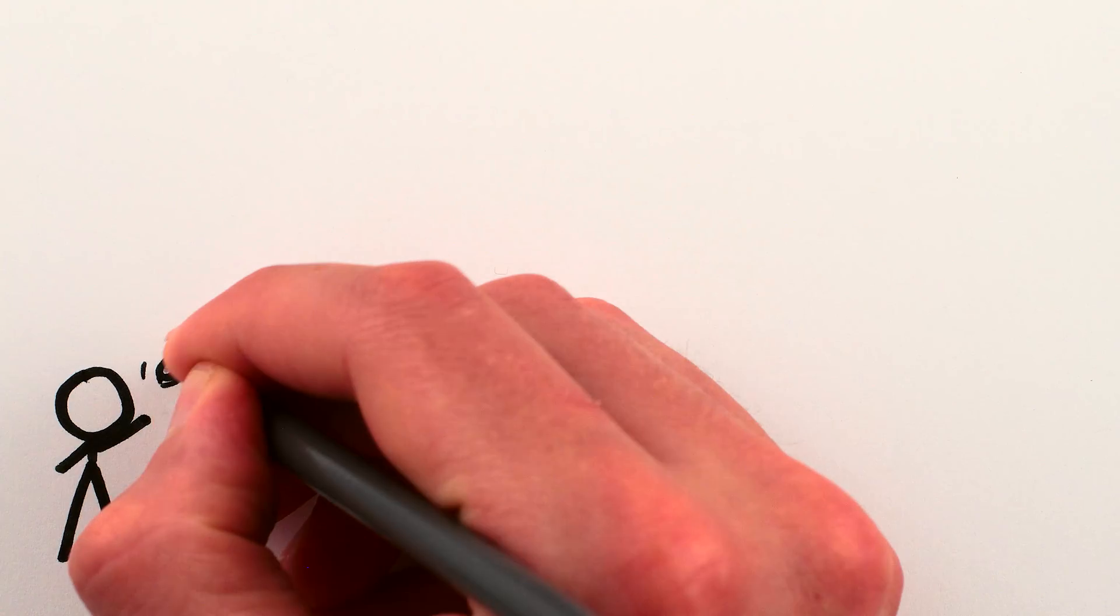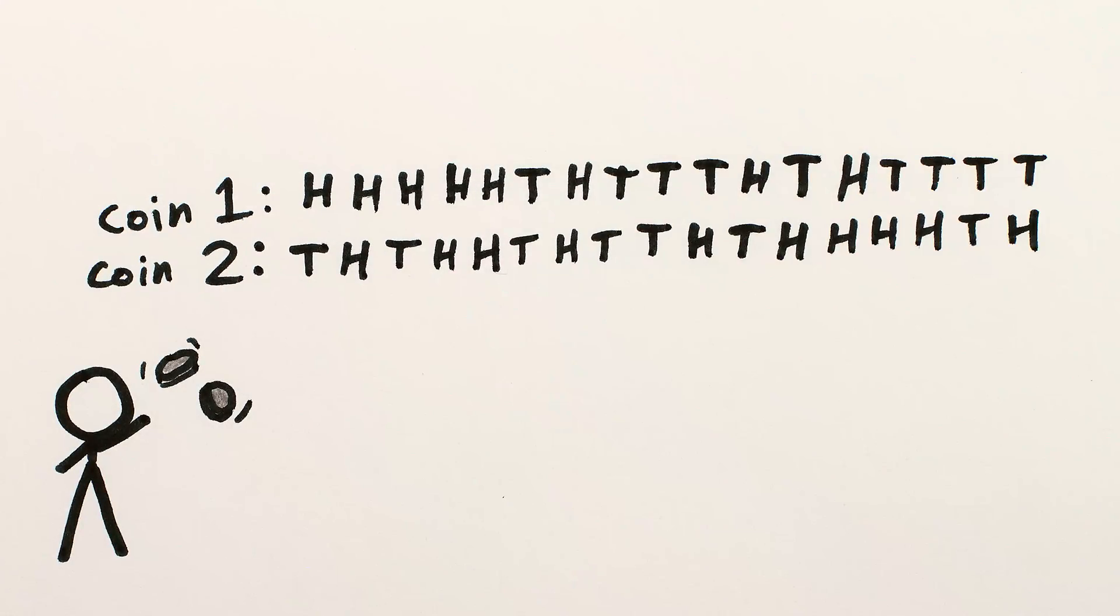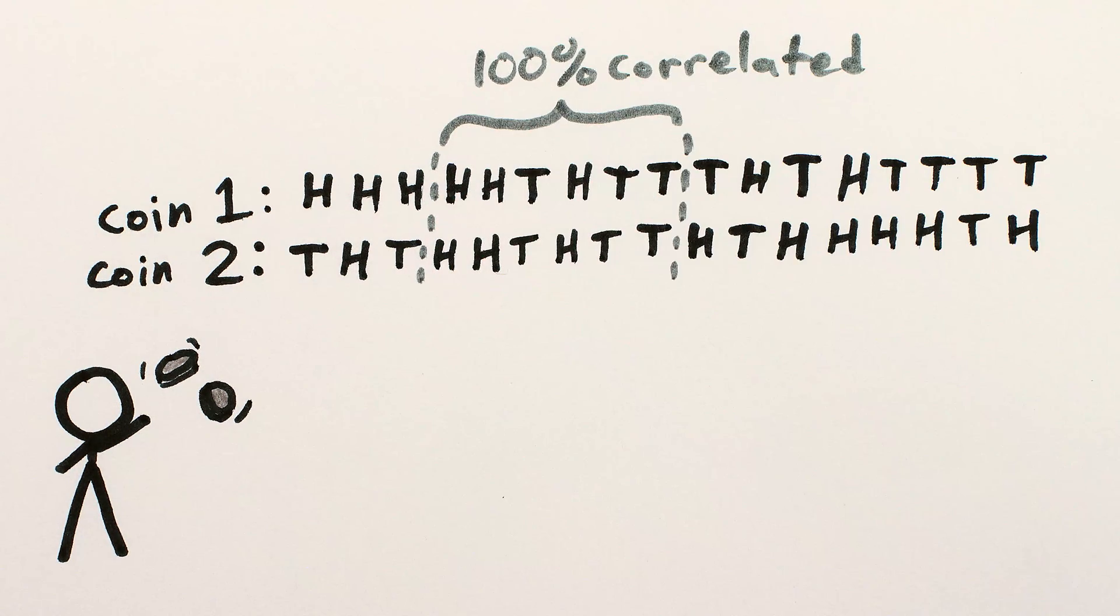As an example of a chance correlation, if I flip two coins enough times, eventually there will be a long string of matching heads or tails just by chance, and if I just cherry pick those flips, I can make it look like the two coins are super correlated.